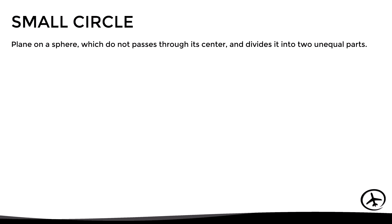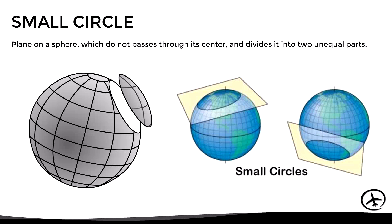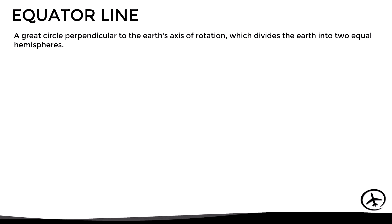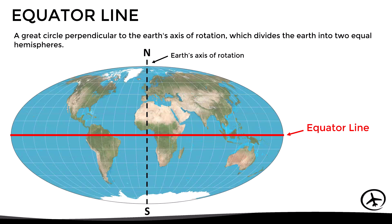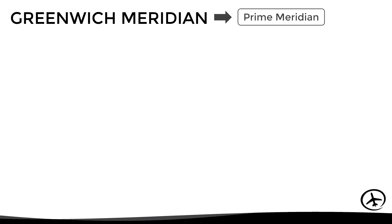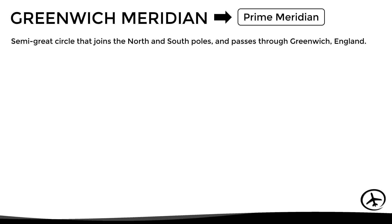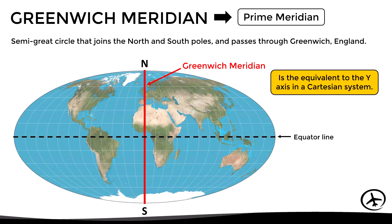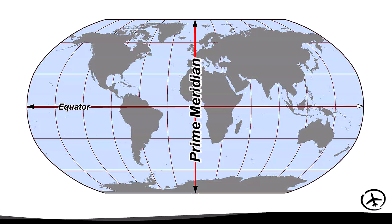A small circle is a plane on a sphere which does not pass through its center and therefore divides it into two unequal parts. Any circle on the earth that is not a great circle will be a small circle. With this in mind, the equator line is defined as a great circle perpendicular to the earth's axis of rotation, which divides the earth into two equal hemispheres — equivalent to the x-axis in the Cartesian system. The Greenwich meridian, also known as the prime meridian, is a semi-great circle joining the north and south poles and passing through Greenwich in England — equivalent to the y-axis.